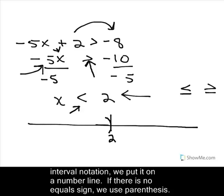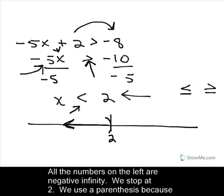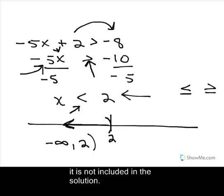The numbers that are less than 2 go out to the left, so when we pull it off the graph, all the numbers on the left are negative infinities, and we go to a positive 2. This has a parenthesis on it, so we put a parenthesis around the 2. Infinities always get parenthesis.